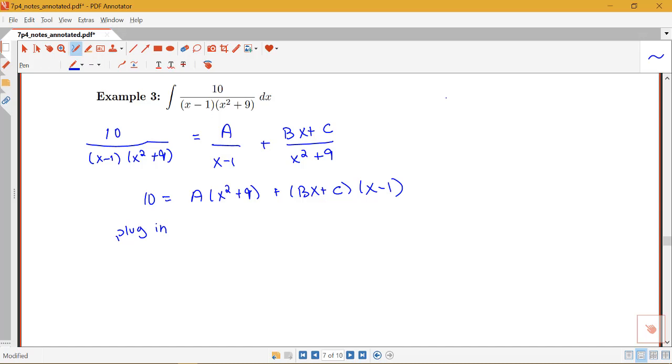So I'll choose to plug in x=1 first. That'll give me 10 = 10A plus (B+C) times 0. So I just have 10 = 10A which makes A equal to 1.